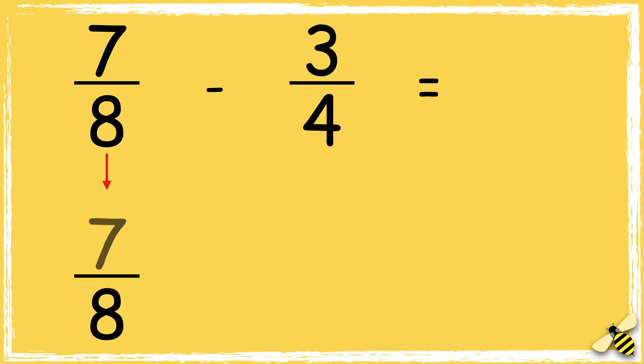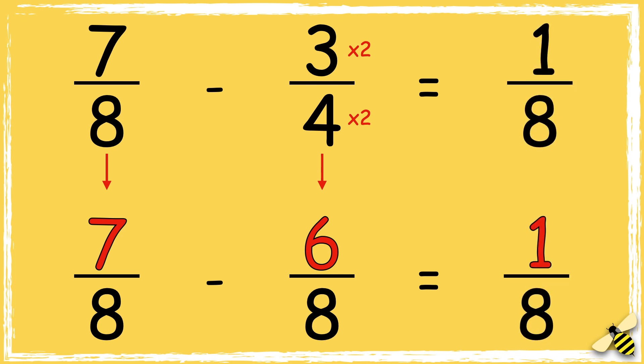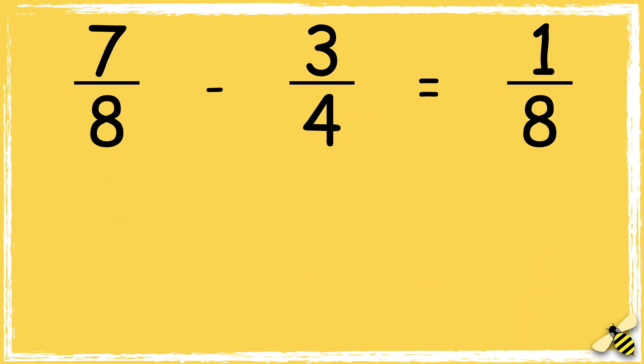I need to multiply 4 by 2 to get 8, so we also need to multiply the numerator by 2. 3 times 2 is 6. Now that our denominators are the same, we can subtract the numerators. 7 take away 6 equals 1, so the answer is 1/8.